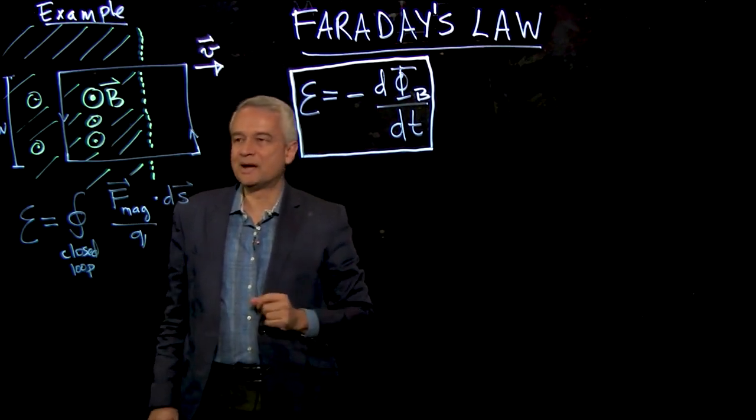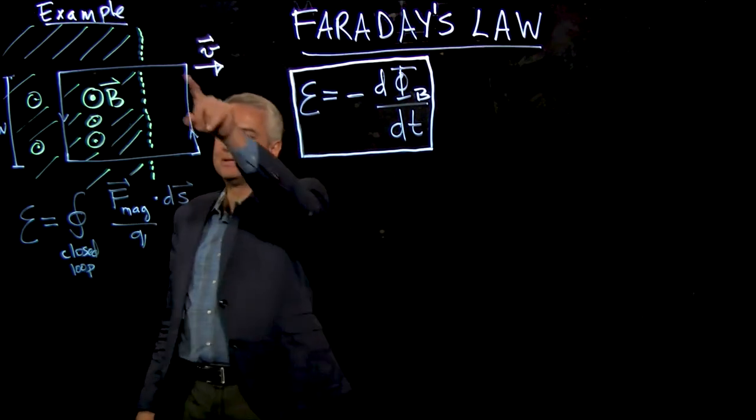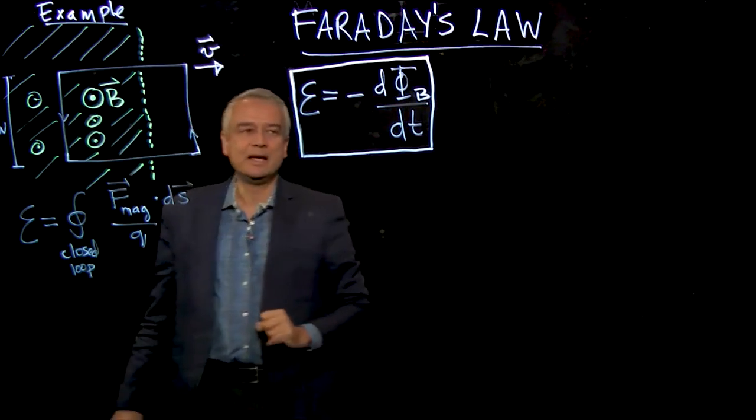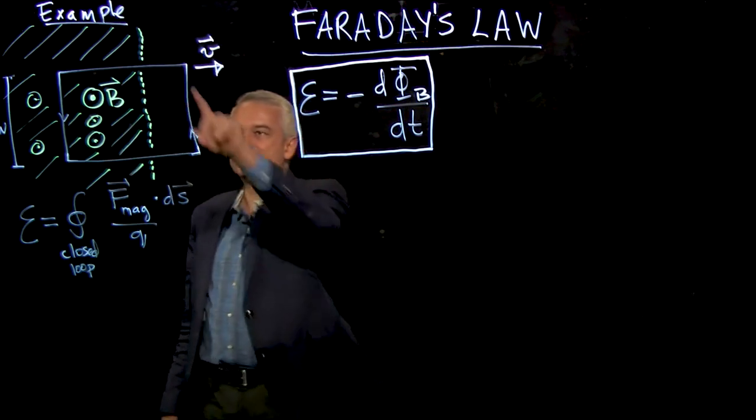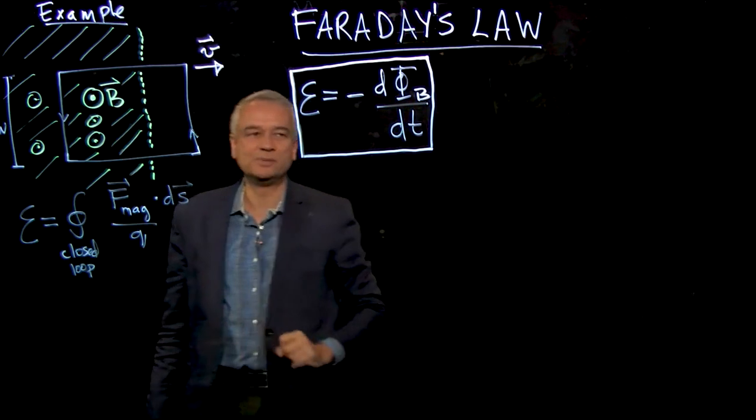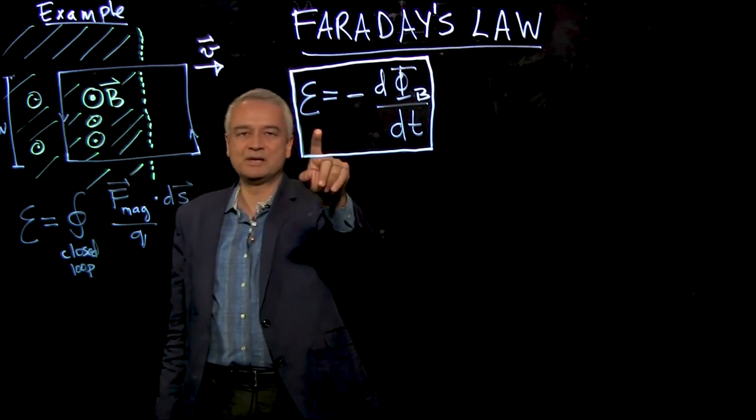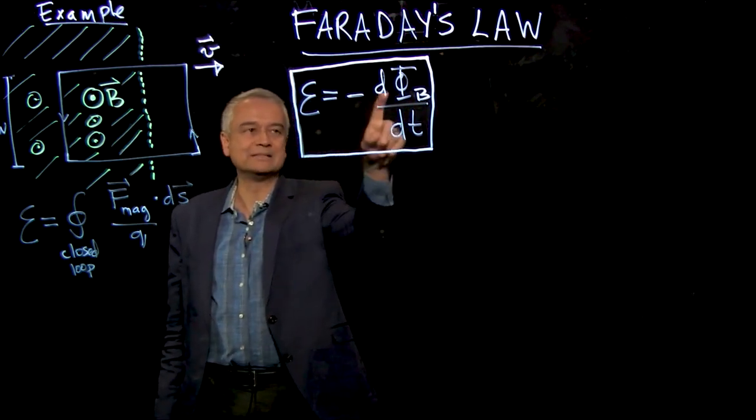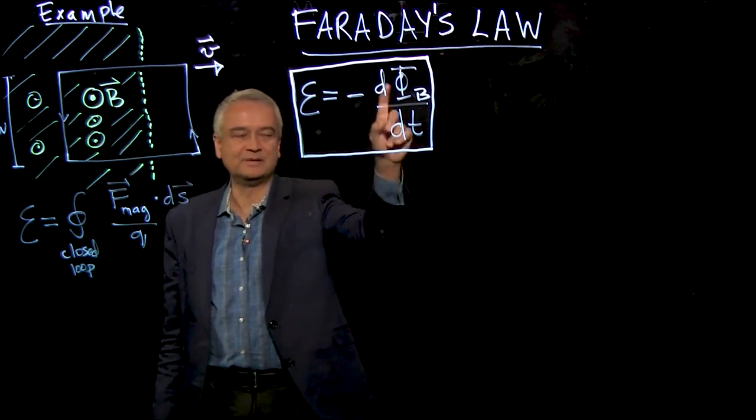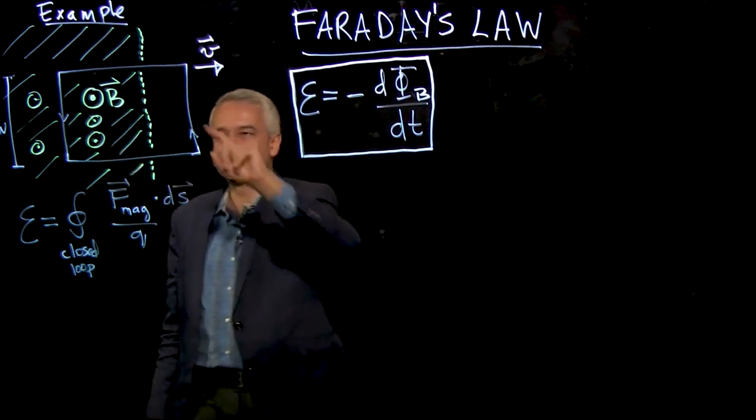Well, first of all, let me remind you what we derived last time. We worked out the EMF around this loop and the change in the magnetic flux through this loop. And we discovered that the EMF around the loop was minus the time derivative of the magnetic flux through the loop.